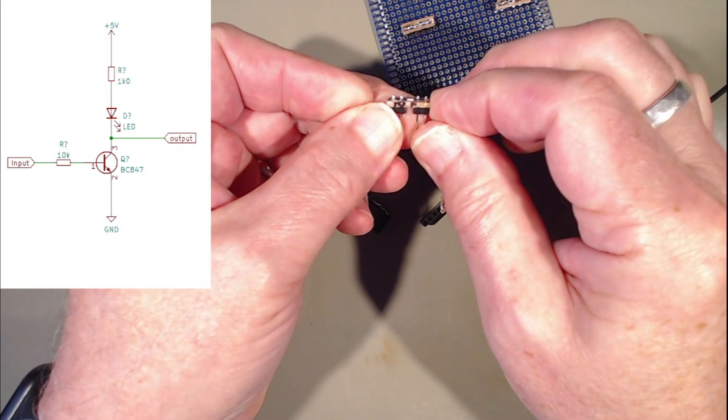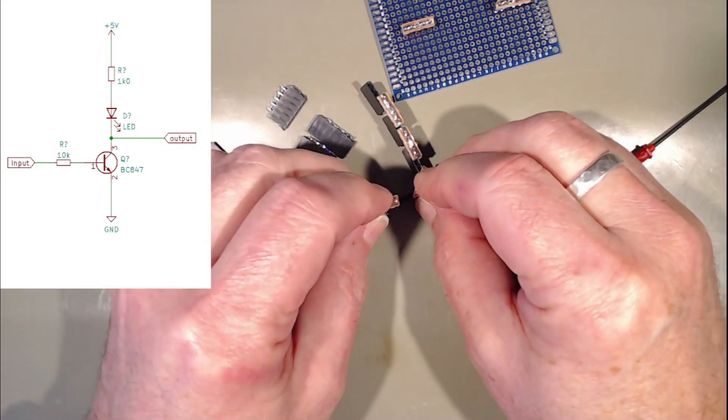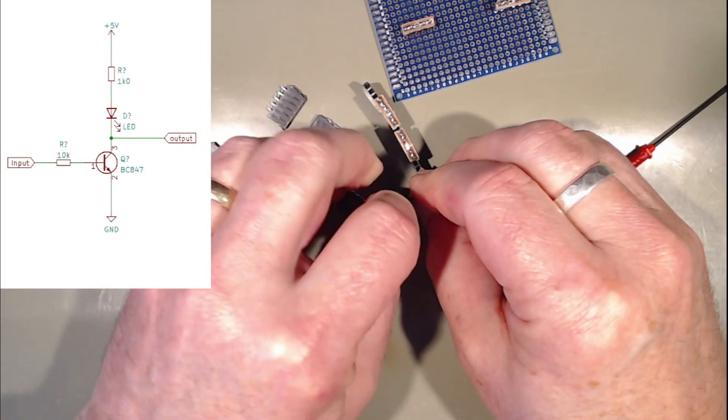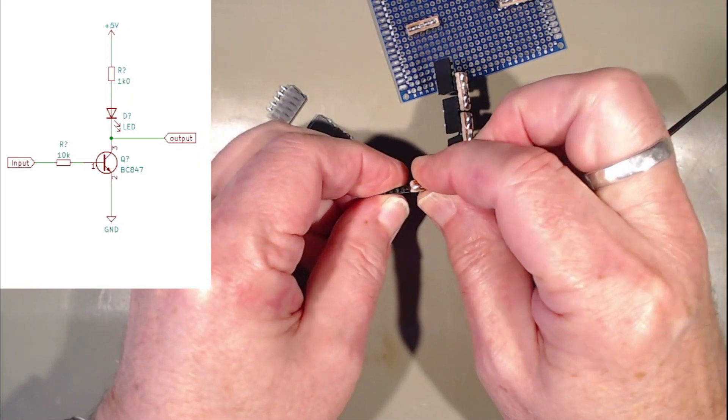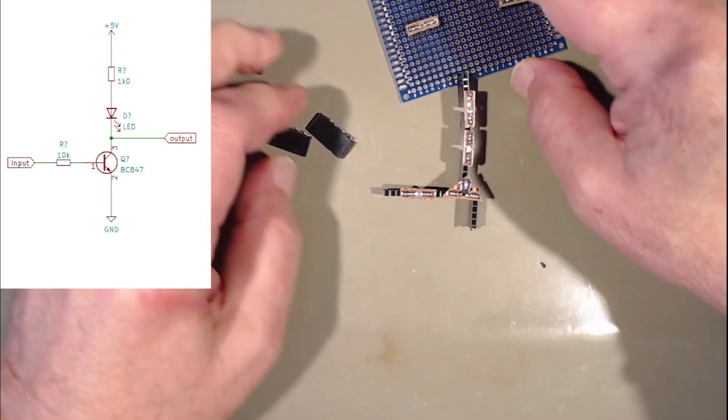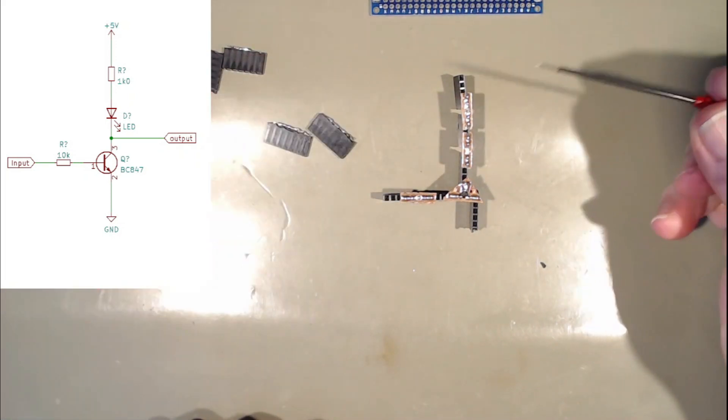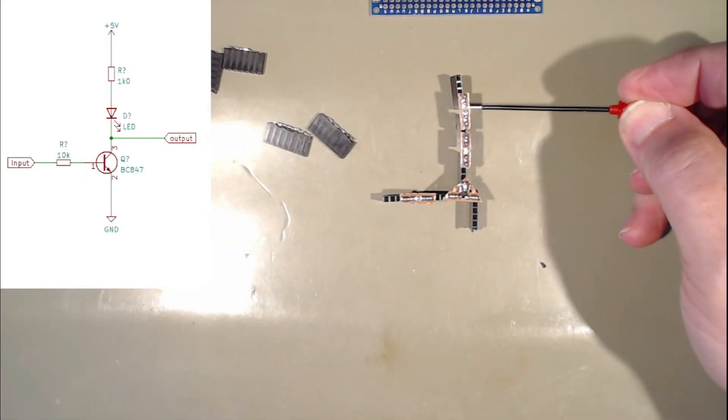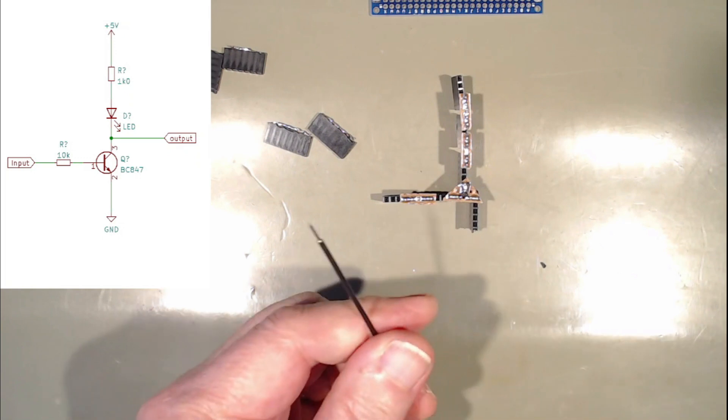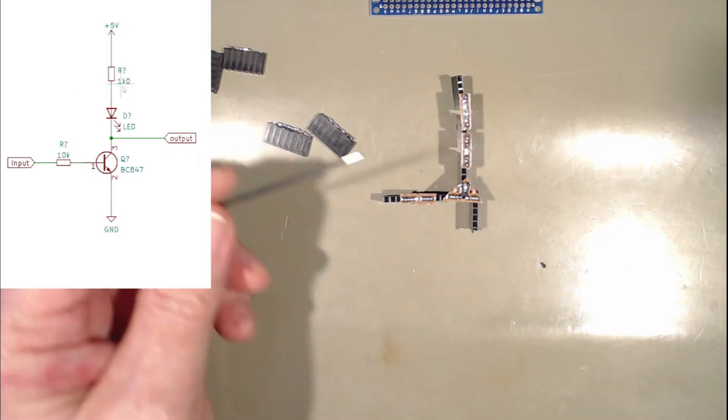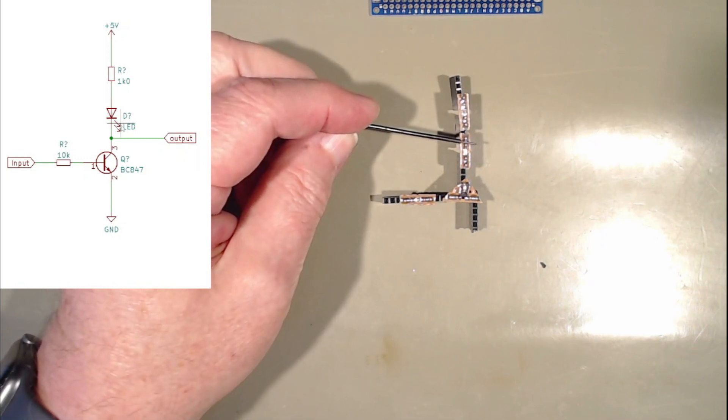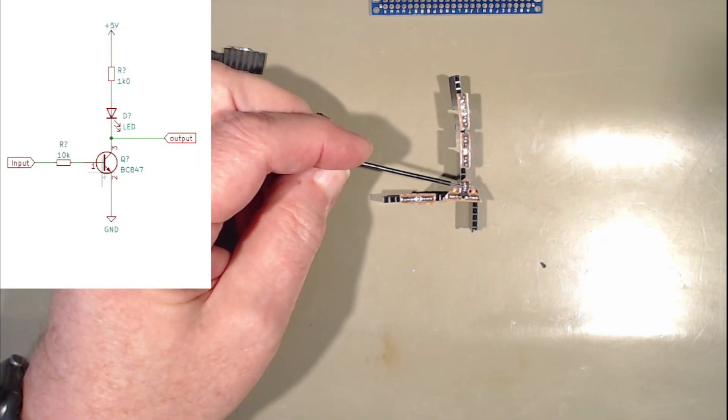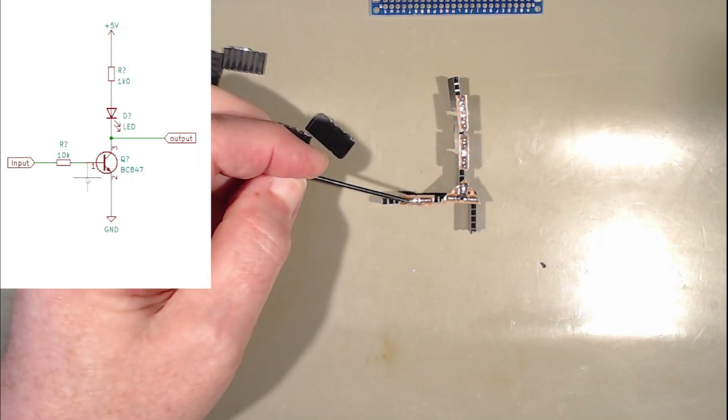We'll use a 10k resistor. We'll plug it on there. And then we'll put one of these on the end. So there we have it. We have a 1k resistor. There is a 1k resistor. We have it there. There's our diode. There's our transistor. And there's our base resistor.